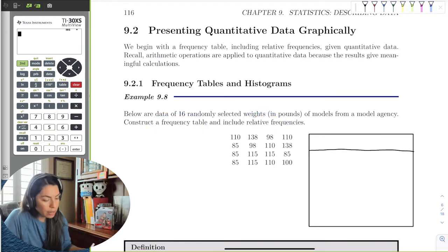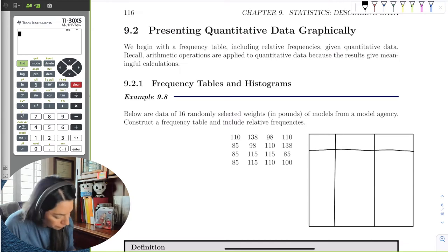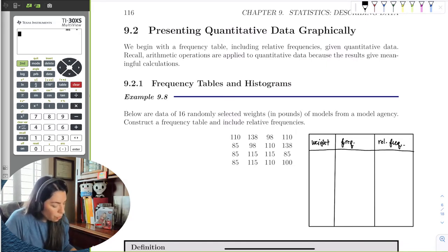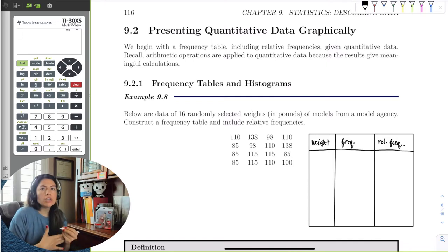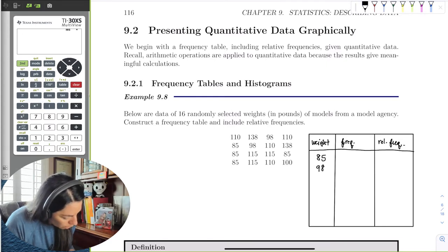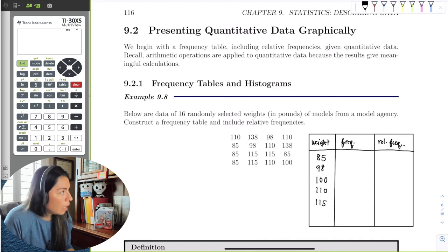And then you'll need some categories. So we can make the relative frequencies column and frequency column on top of our category column. So here is the weight, that's the category we're doing, and then two more columns for relative frequency. So I'll put frequency, freq, and then rel freq, and then weight in pounds. The weight, I would organize it so it goes low to high. So I would look at 85, then 98, 100, 110, 115, and 138.